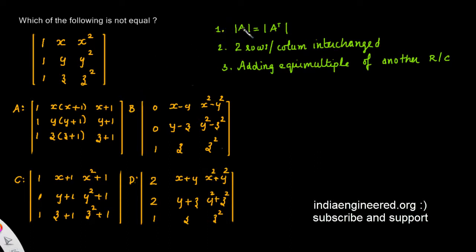The first property is the determinant of A and its transpose is equal. If two rows or columns are interchanged, the determinant value will get multiplied by minus one. We can add equal multiple of one row to another without changing the value of the determinant.